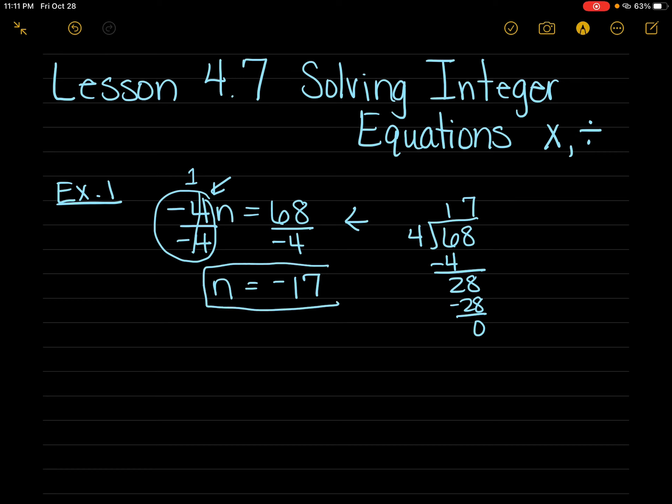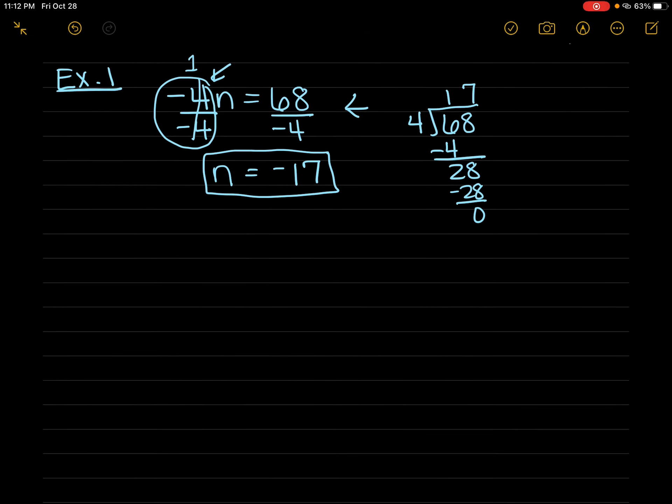So, there's my answer, n = -17. You're going to solve the equations just like we have in the past, but you're going to use your rules for the integers for multiplying and dividing.